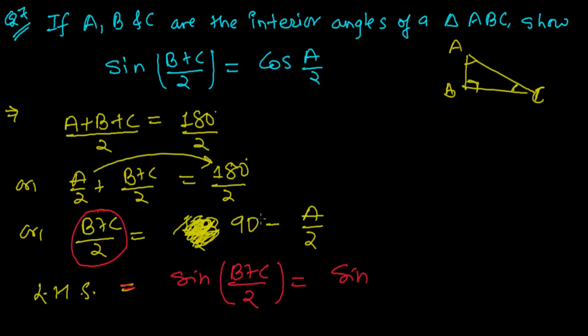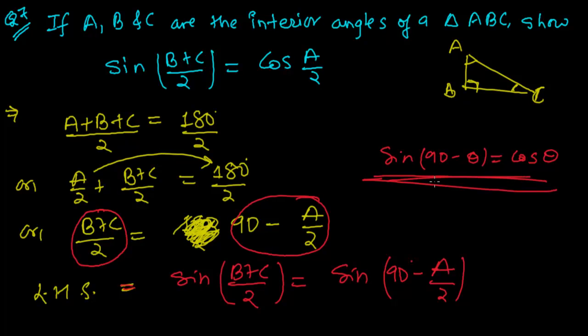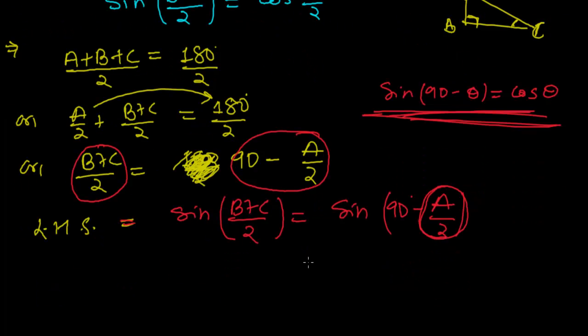That sin (B+C)/2 is equals to sin of (90 - A/2). And what do we know? That sin of (90 - theta) is always equals to cos theta. So using this complementary relationship, this A/2 will work as theta. And now I can write this as cos theta, that is cos A/2.